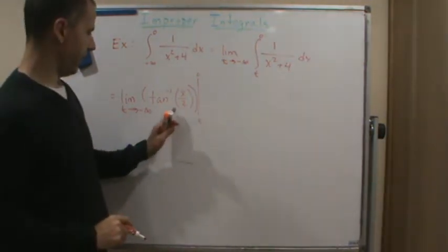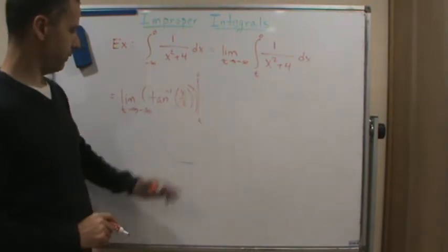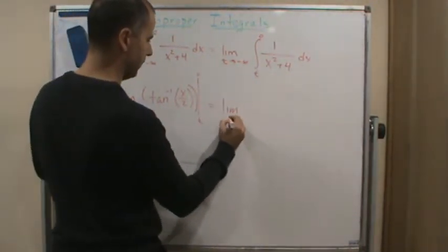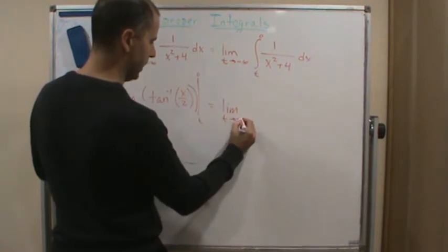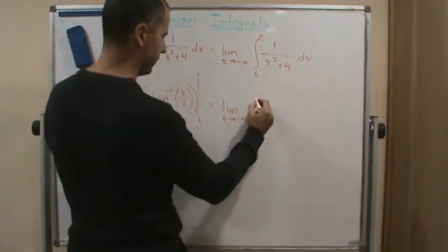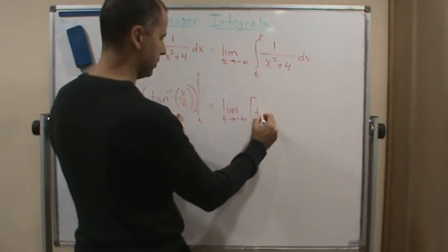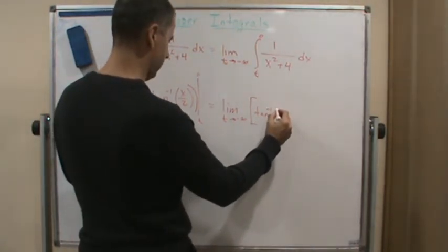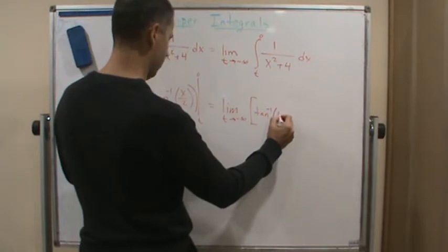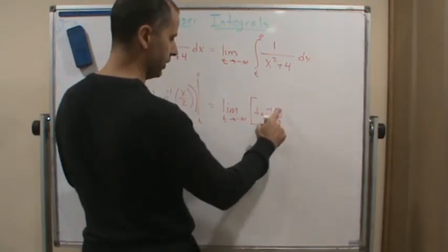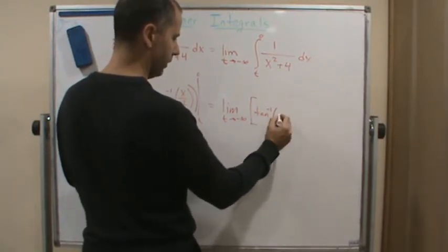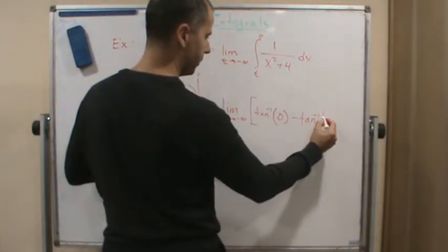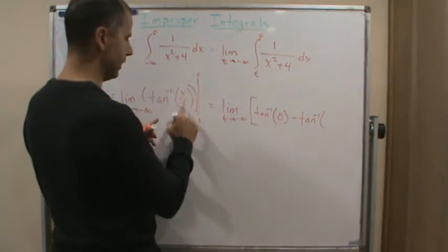Now what we're going to do is evaluate this using the fundamental theorem of calculus. So now this becomes the limit as t approaches negative infinity of tangent inverse of 0 over 2, which is just 0, right? Minus tangent inverse of t over 2.